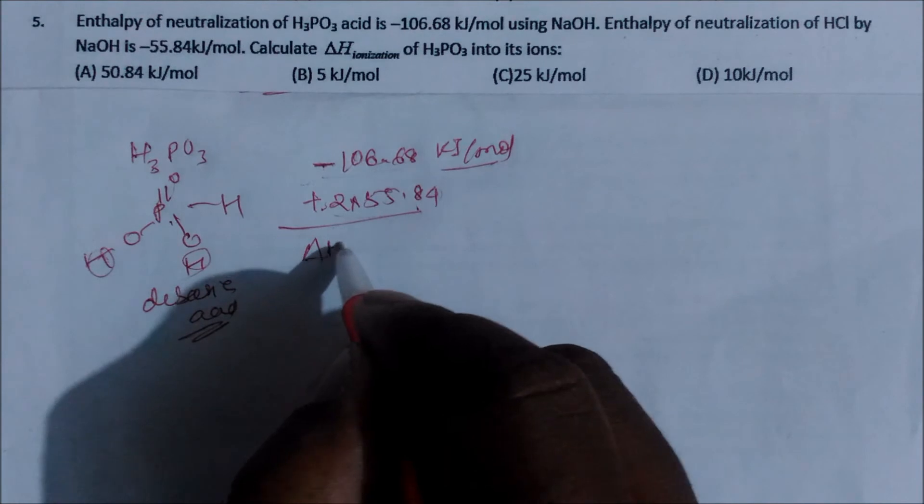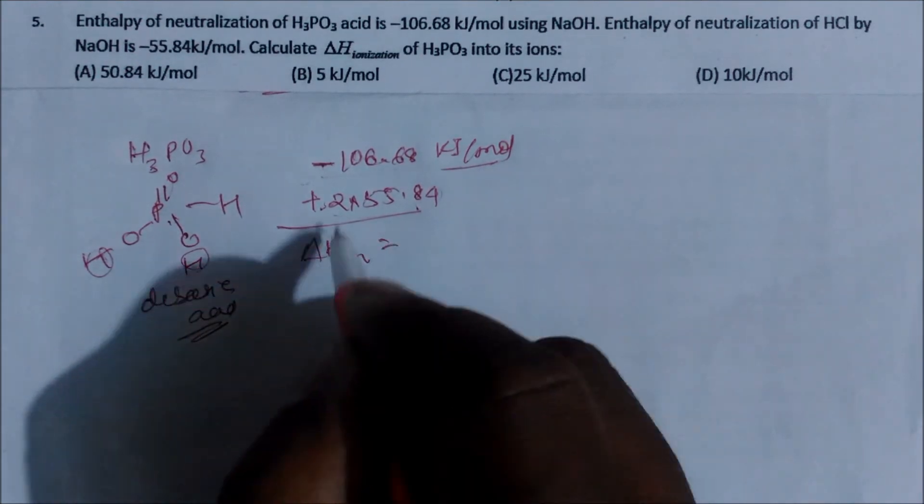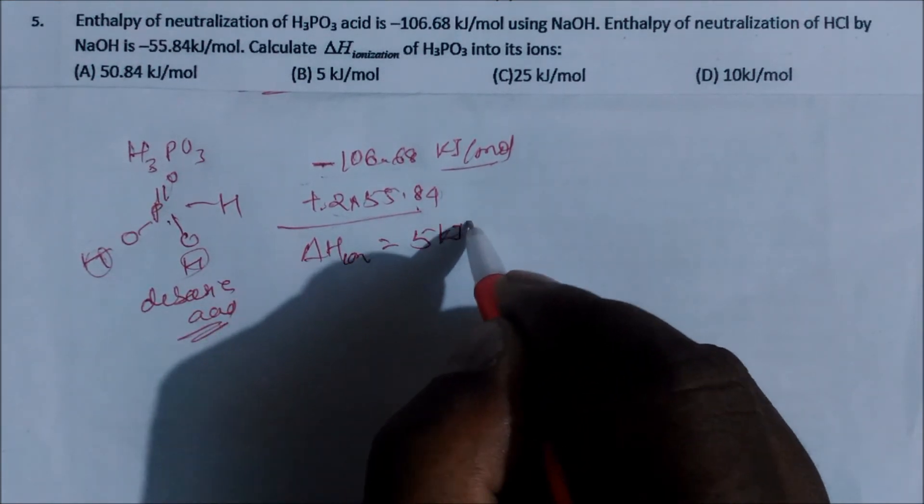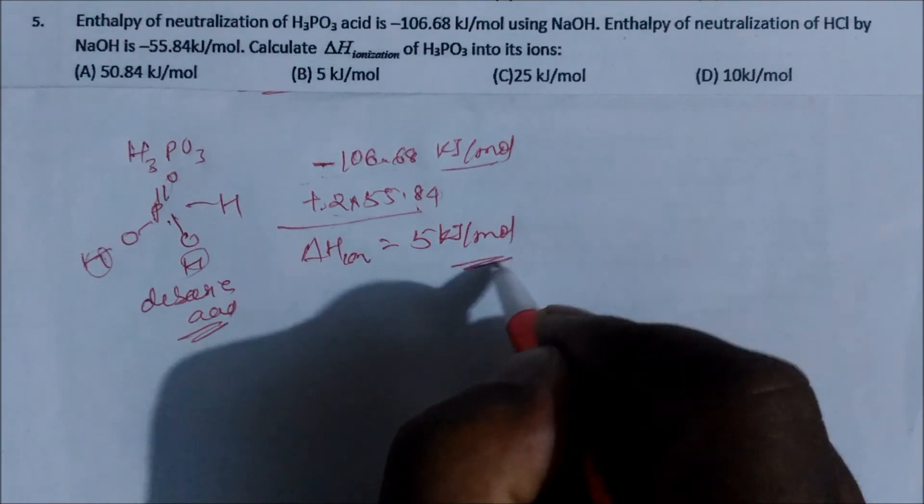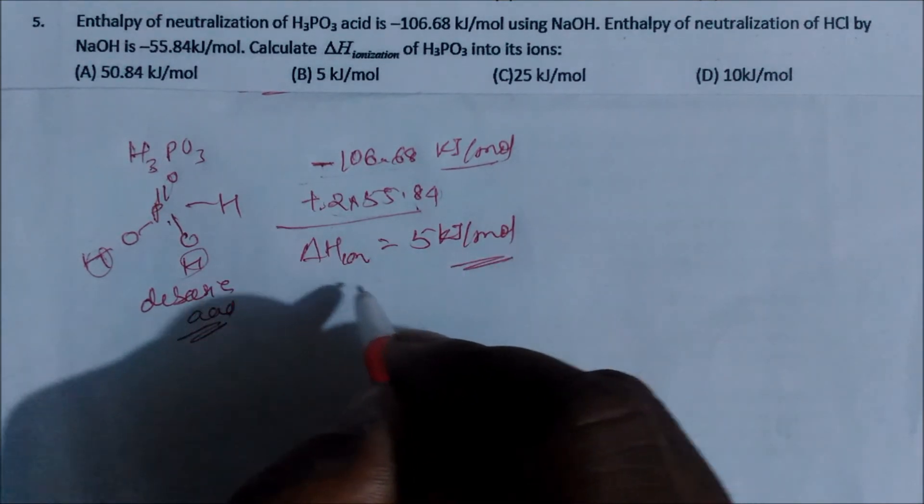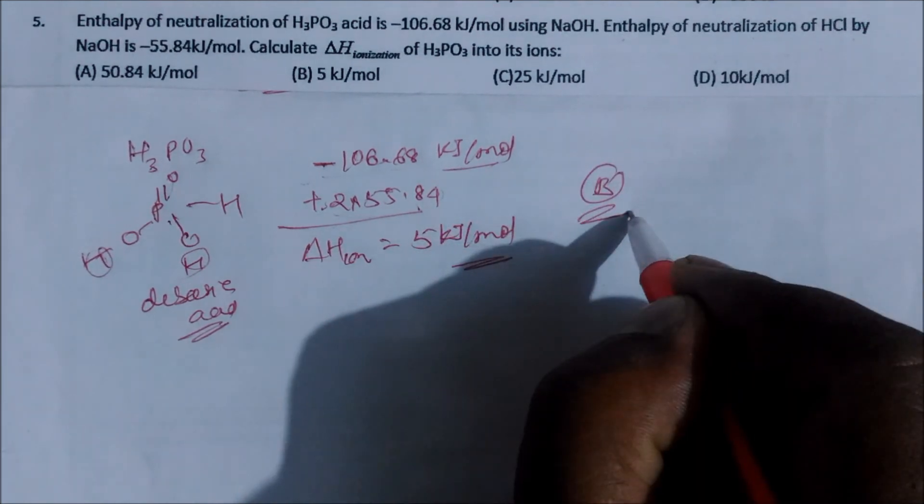So heat of ionization will be, if you solve this whole equation, you will get this answer: 5 kJ per mole. This means our option B is the correct answer.